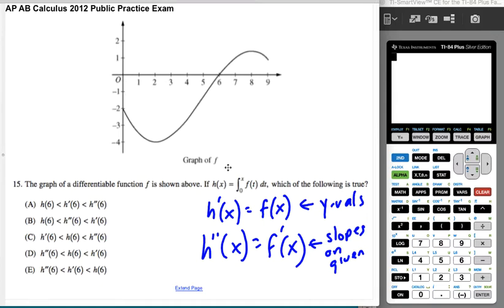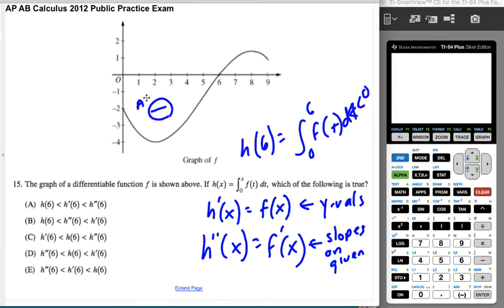It's worth noting that h(6), which is the integral from 0 to 6 of f(t)dt, has to be negative because this is a negative area. If you integrate from 0 to 6, that's a negative area. So h(6) is negative.